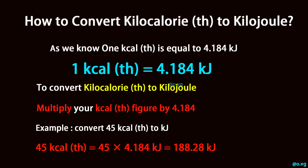Example: convert 45 kilocalorie th to kilojoule. 45 kilocalorie th is equal to 45 times 4.184 kilojoule, equals 188.28 kilojoule.